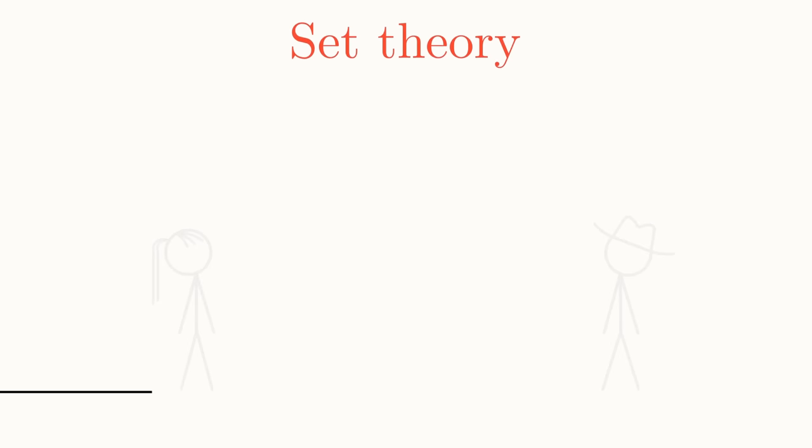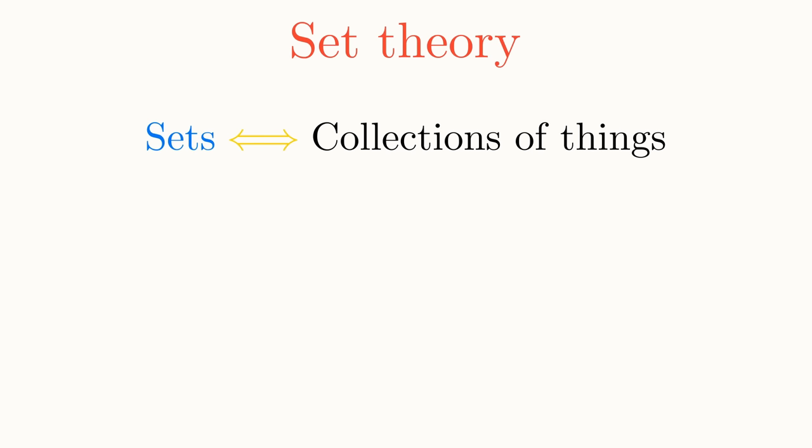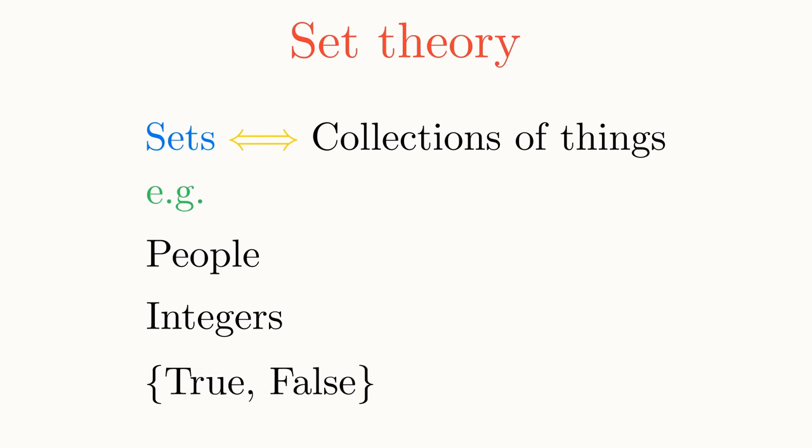Set theory is the study of, well, sets, which simply refer to a collection of things. For example, the set people contains every person, and the set integers contains every whole number. If our set is relatively small, we can write the set as curly brackets with the items we want in the set listed inside.